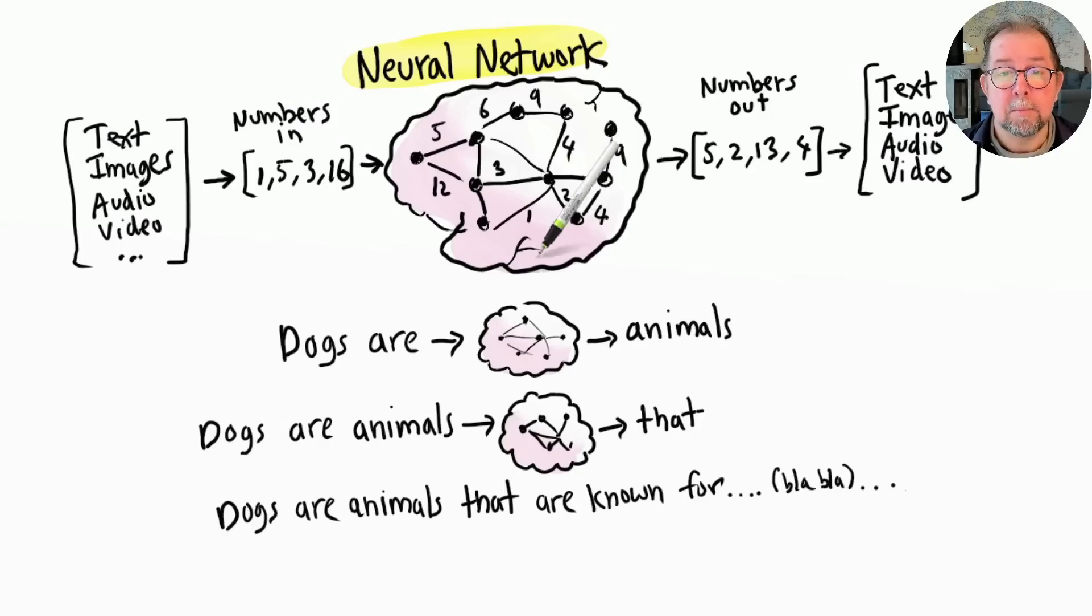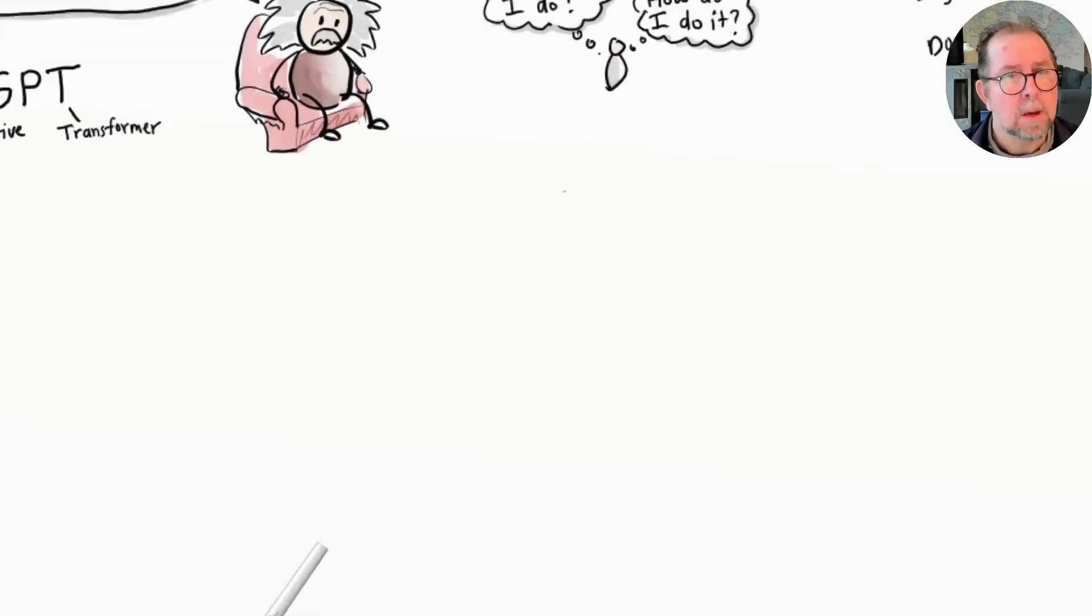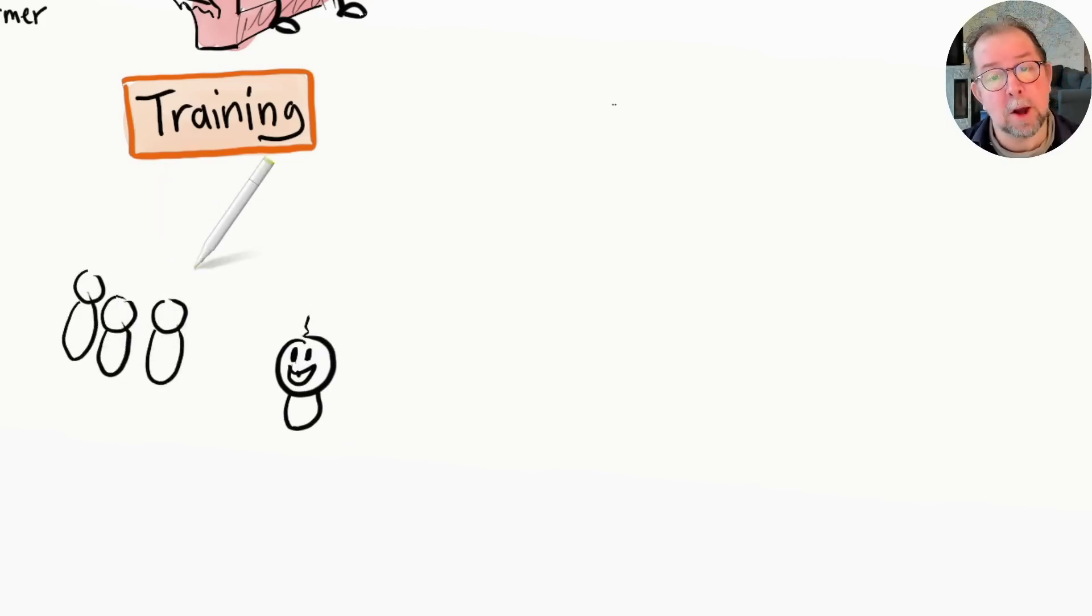A large language model may have billions or even trillions of parameters. That's why they're called large. So how are all these numbers set? Well, not through manual programming - that would be impossible - but through training, just like babies learning to speak. A baby isn't told how to speak. She doesn't get an instruction manual. Instead, she listens to people speaking around her.